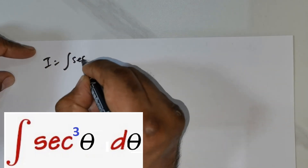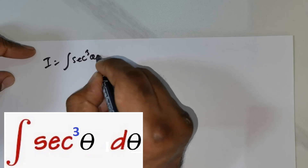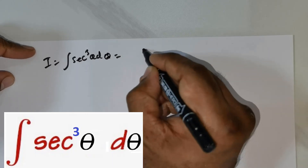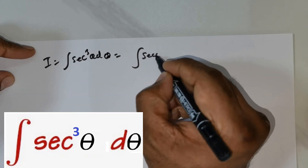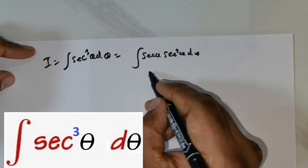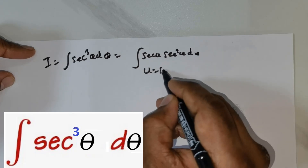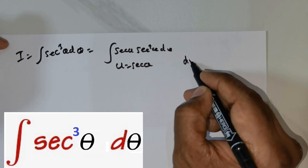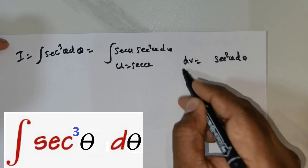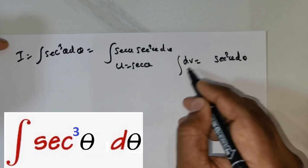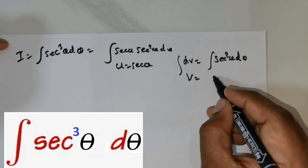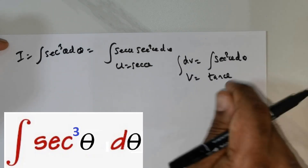I being equal to integral of secant cube theta d theta. I wrote this as secant theta times secant square theta d theta. I took the value of u to be secant theta, and dv to be secant square theta d theta. I need to get the value of v, and the integral of secant square theta is tan theta.